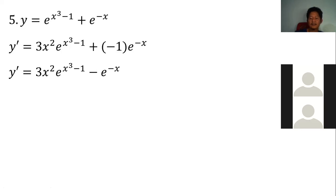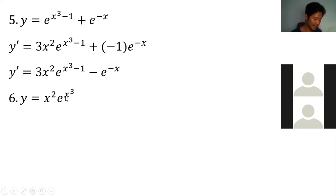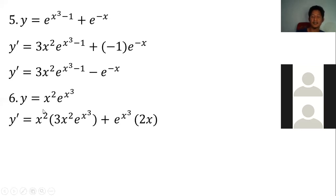How about this next one? Notice that when you see x being multiplied — remember, when factors are multiplied together, the rule to use is the product rule. Using the product rule: copy the first factor times the derivative of the second, plus copy the second factor times the derivative of the first.